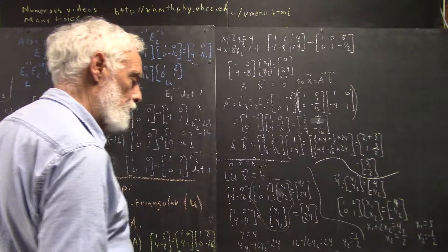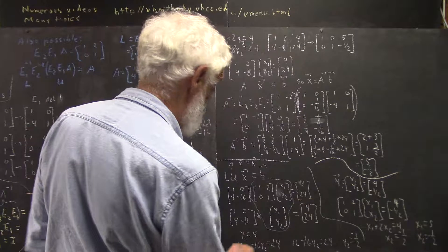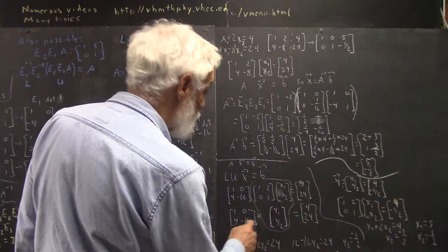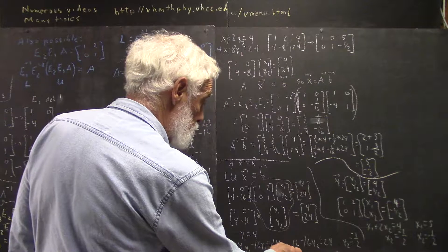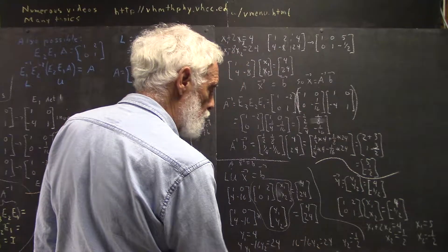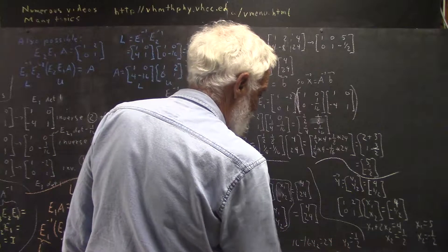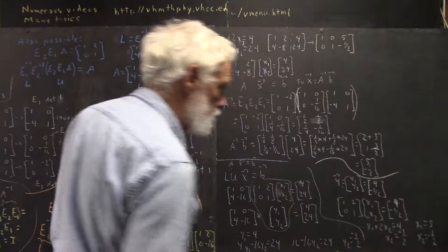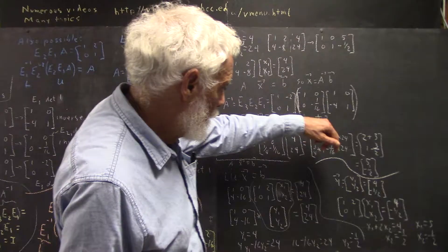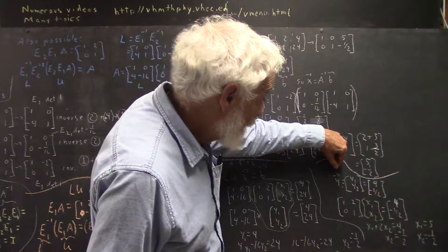And then, multiplying this by this, we get 4Y1 minus 16Y2 equals 24. How do we solve that? Well, we've got Y1, it's 4. Forward substitute it into this. We get 4Y1, which is 16, minus 16Y2 equals 24. 24 minus 16 is 8. 8 divided by negative 16 is negative 1 half.